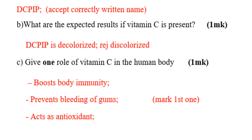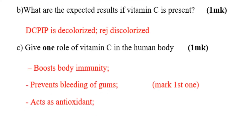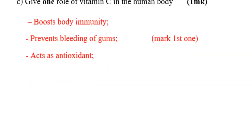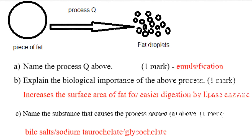Part C: give one role of vitamin C in the human body. Number one — boost body immunity. Number two — prevent bleeding of gums. Number three — act as antioxidants. That is the work of vitamin C in the human body.